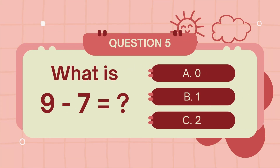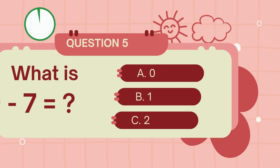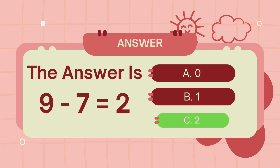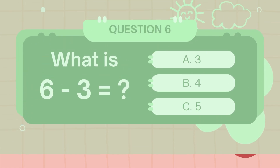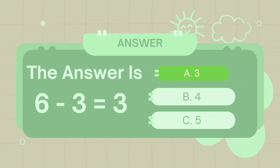What is 9 minus 7? The answer is 2. What is 6 minus 3? The answer is 3.